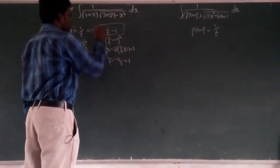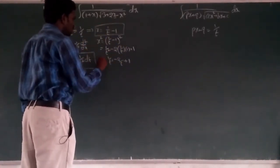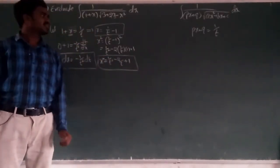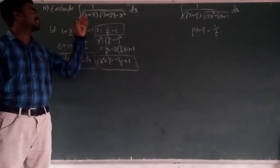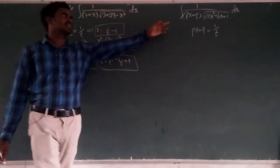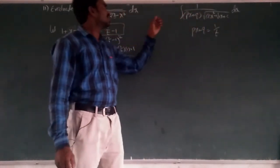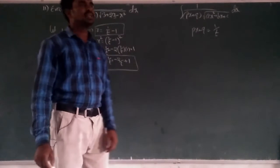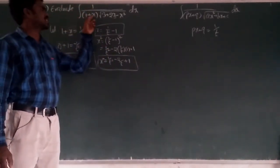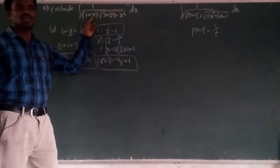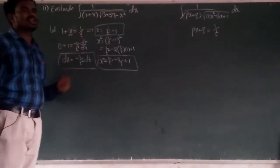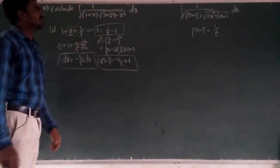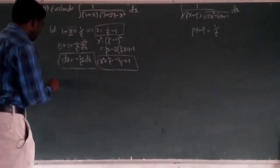Each and every value — x² means 1/t² − 2/t + 1. First of all, the question has 1 + x in the denominator. In place of (px + q), there is (x + 1) or (1 + x). So take 1 + x = 1/t and write the steps, then take the question.